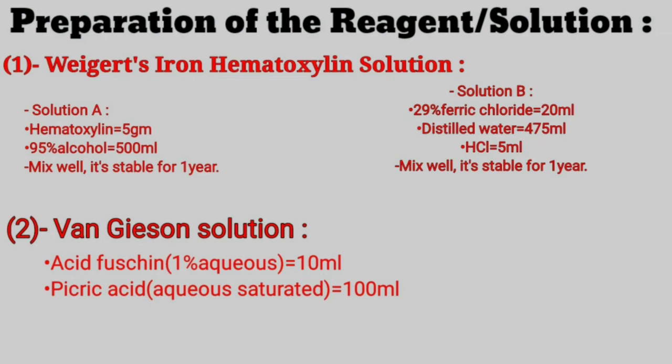For Solution B: take 29% ferric chloride 20 ml, then distilled water 475 ml, then hydrochloric acid 5 ml. Mix these together.